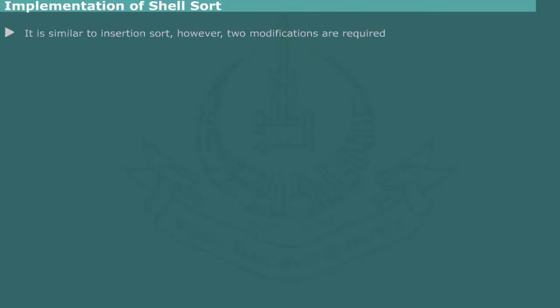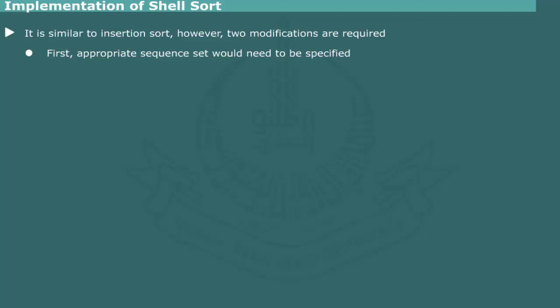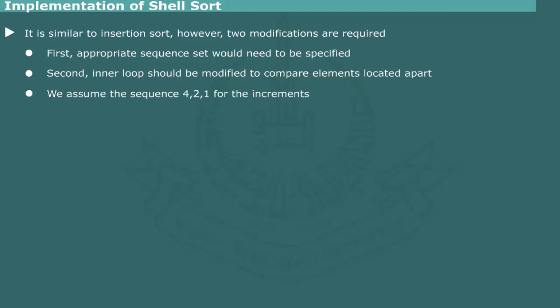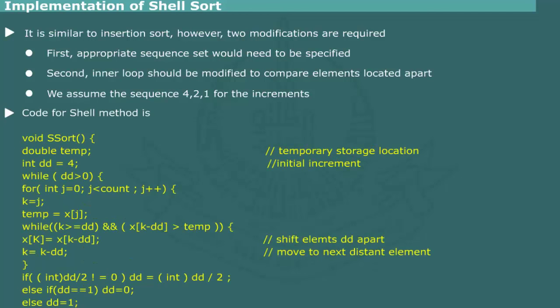Implementation of Shell Sort: The implementation of Shell Sort is similar to that of Insertion Sort, but with two modifications: first, an appropriate increment sequence must be specified; second, the inner loop must be modified to compare and shift elements located apart according to the specified increment sequence. We assume the sequence 4, 2, 1 for the increments. Starting with initial value 4, the increment is reduced by half after the first cycle and set to 1 in the last cycle.